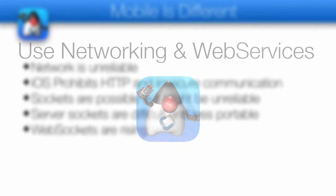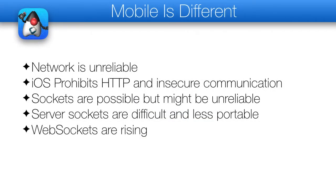First, and most importantly — for those of you in the backend or server world this might not be a shock — network on mobile devices is unreliable. However, the extent of this is sometimes surprising to developers who are new to mobile. That's why many low-level networking strategies are discouraged on mobile devices.